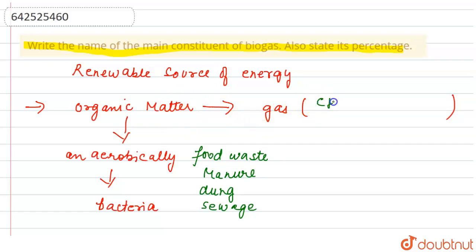Biogas has the composition of methane, carbon dioxide, nitrogen, hydrogen, hydrogen sulfide, and traces of oxygen. The majority of the gas is methane, which forms around 50 to 75 percent. Carbon dioxide is the second largest at around 25 to 50 percent.